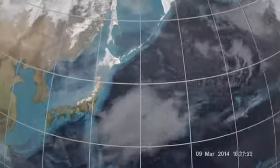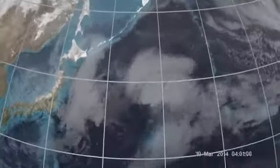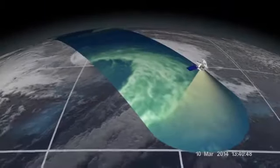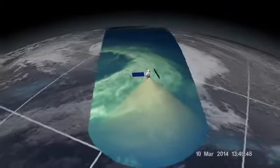The new GPM Microwave Imager, or GMI, produced unprecedented images of an extratropical cyclone in the Northwest Pacific Ocean east of Japan on March 10, 2014.